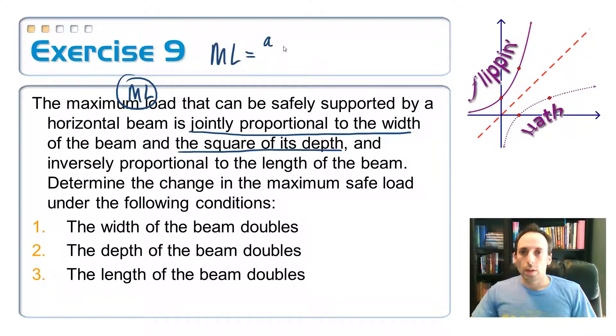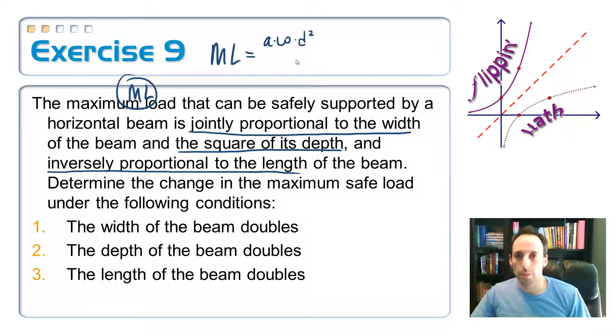So I need a constant of variation in here. We'll call that A. The width, W, and the depth squared, D squared. Jointly means that I'm multiplying them. And inversely proportional to the length of the beam. Let's call length L. That makes sense. And I have to divide by that L. So there's the equation. I don't know what the A value is without specific numbers, but that's not what this question is about.